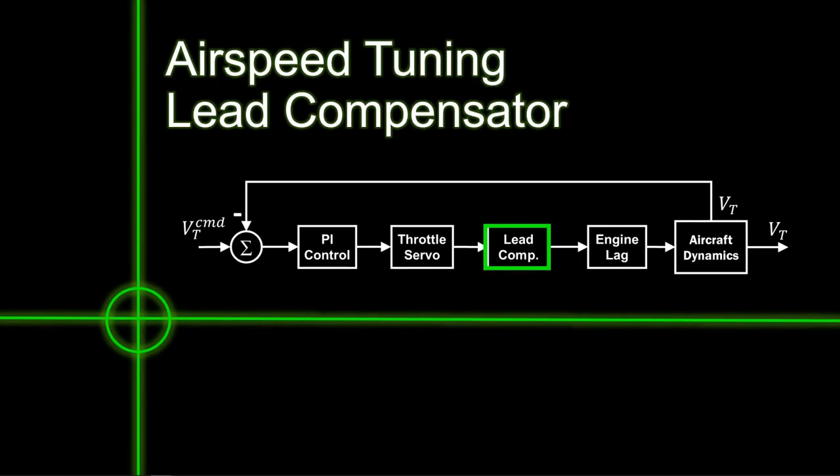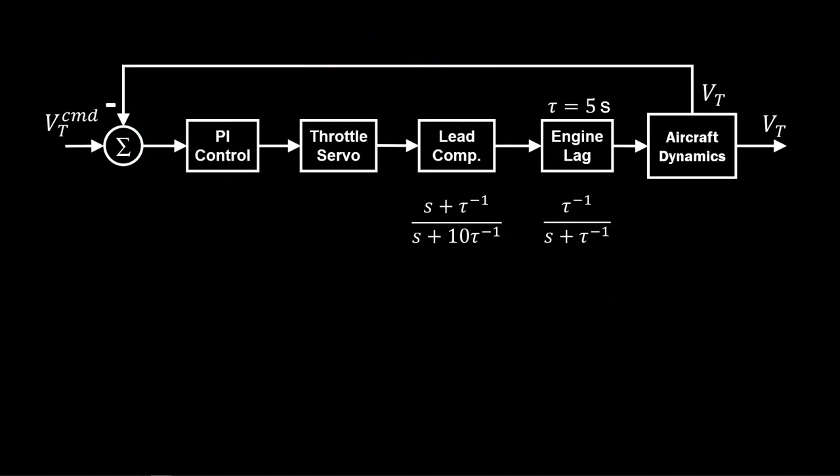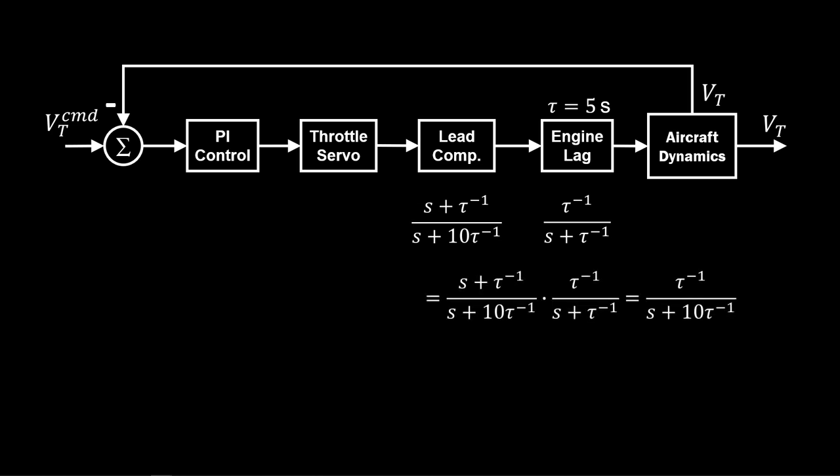This suggests a formula relating gain to range, or gain scheduling or adaptive control, for successful automatic landing systems. Now let's look at the airspeed loop, starting with the lead compensator. One way to view the compensator is to anticipate the slow five-second engine response and cancel that pole in the engine with something much faster. The lead compensator is selected for 10 times faster than the engine lag.